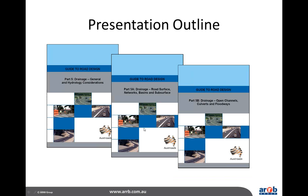Thank you, Angela. The presentation is about the Ausroads Guide to Road Design, Part 5, which is now comprising three parts: 5A and 5B. The three parts were developed because there was a need to move from the earlier 2008 version, which attracted significant criticism about missing information and a lack of worked examples. These parts were developed by a working party comprising representatives from road agencies across Australia and New Zealand, who are listed at the start of each part.